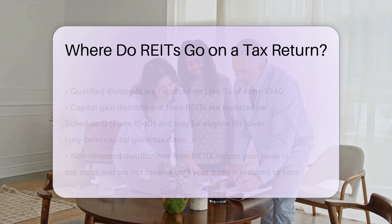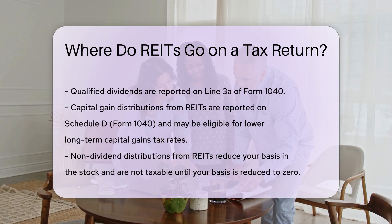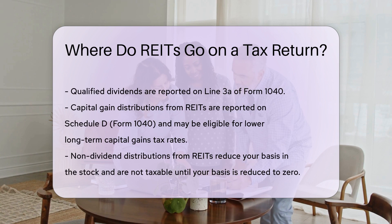Qualified Dividends from REITs are also reported on Form 1099-DIV. These dividends may qualify for a lower tax rate. They are reported on Line 3A of Form 1040.